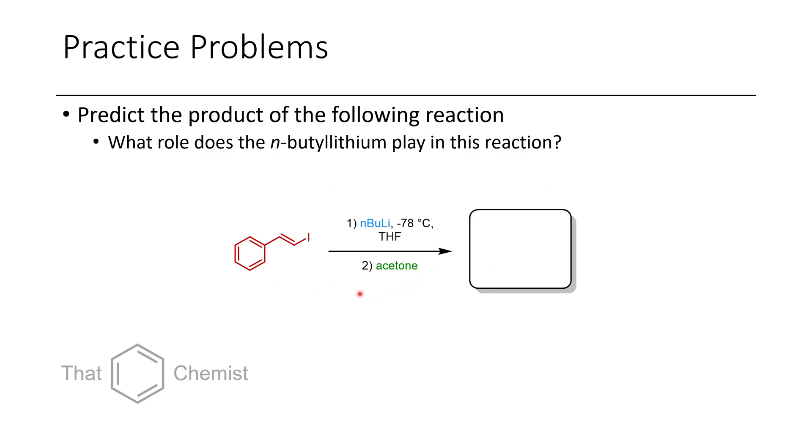For the practice for this lecture, there's three problems I'd like to assign. First, given the following reaction conditions with this starting material, what product are you afforded with? What role does the N-butyllithium play? Is it a base? Is it acting as a transmetallation reagent? What's it doing?